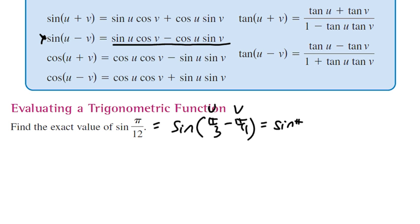So sine of pi over 3 times cosine of pi over 4 minus cosine of pi over 3 times sine of pi over 4.